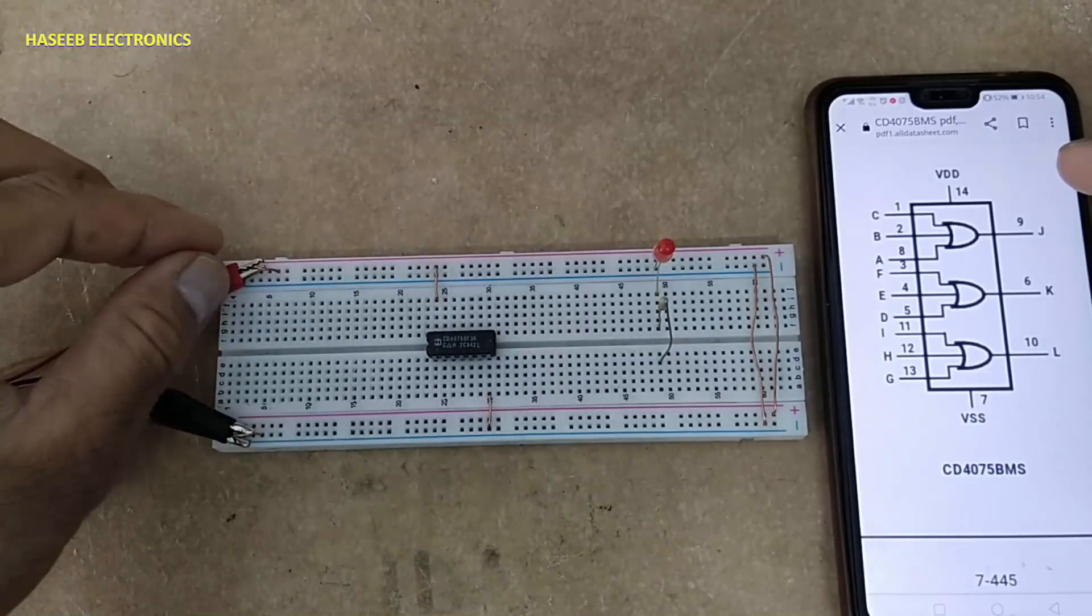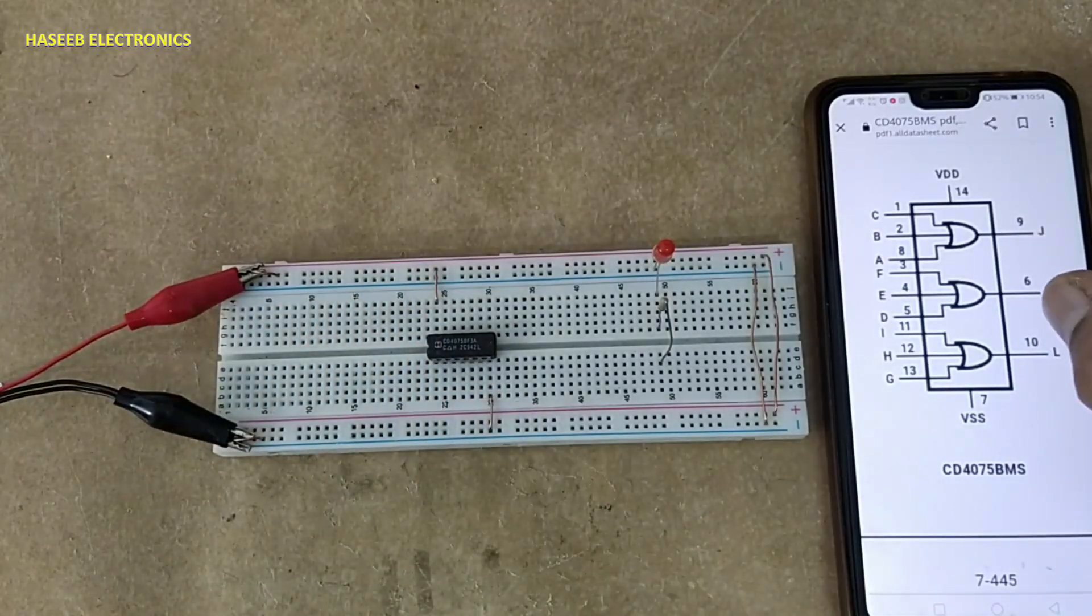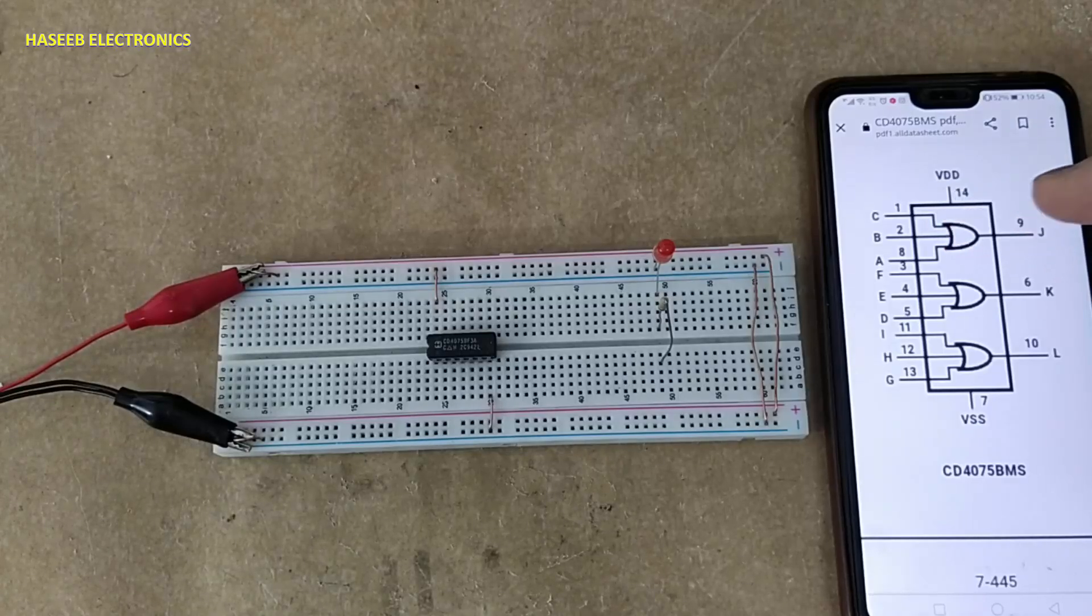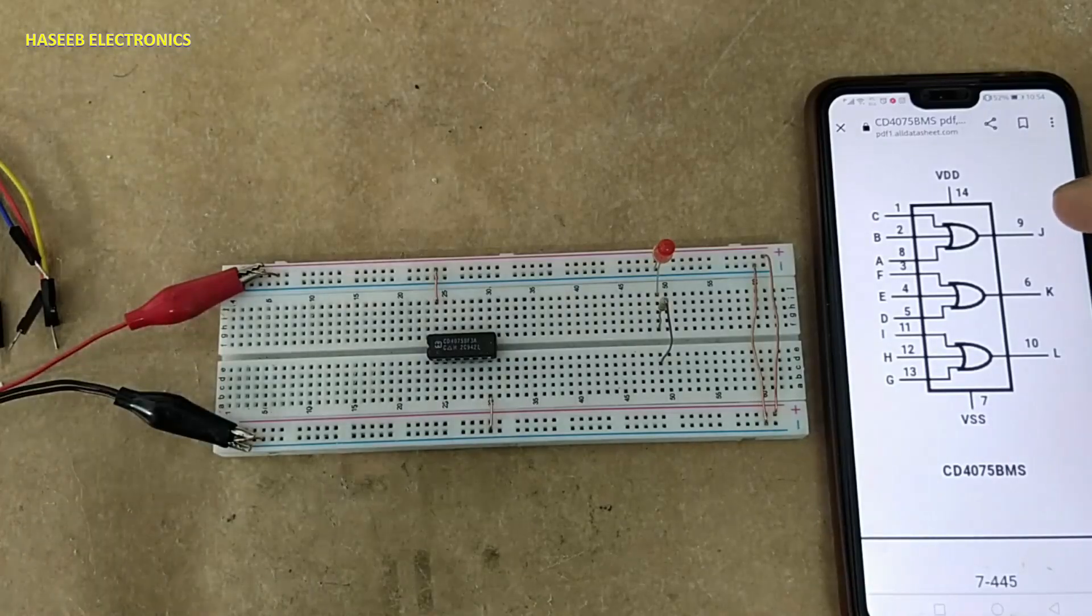I connected five volts to pin number 14 positive, pin number 7 ground. Pin numbers 1, 2, and 8 are inputs for the first gate. Pin number 9 is the output.